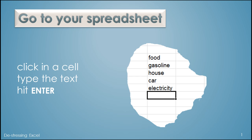Go to your spreadsheet and enter some text — it doesn't matter what it is. Put it in four or five cells. After you type the text in each cell, press the Enter key.